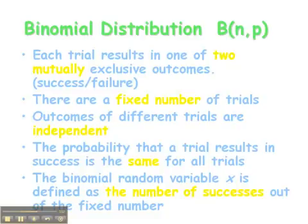These are basically the definitions of a binomial distribution and what's required for a random variable to be binomially distributed. We're going to take a look at a couple of examples to determine whether the experiment conducted was binomial or whether it's not a binomial distribution. Are these binomial distributions?